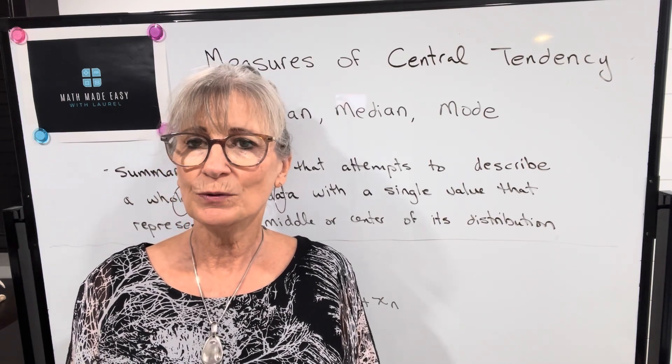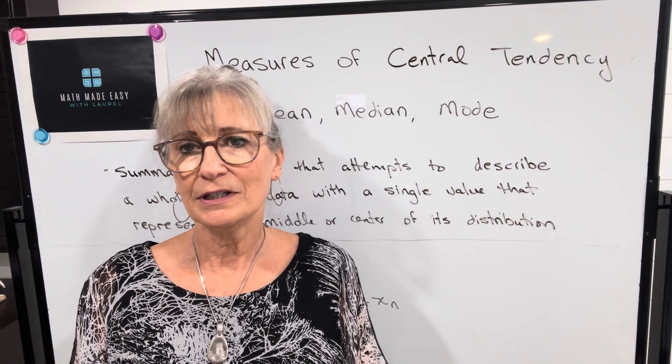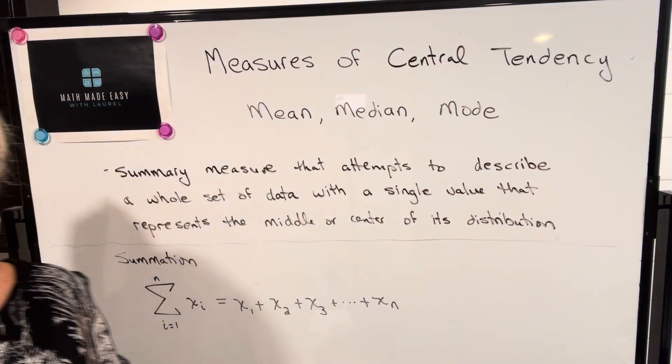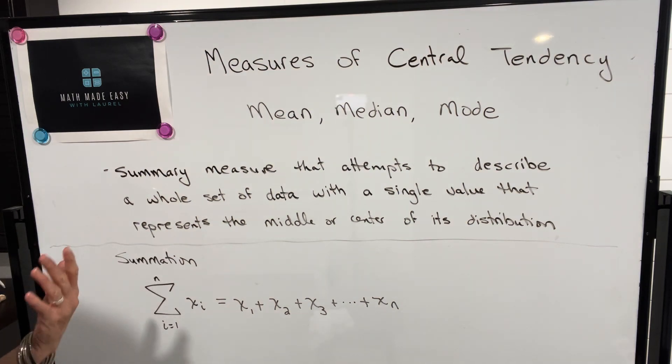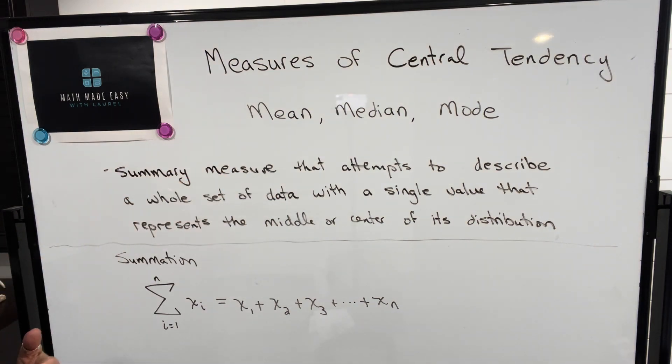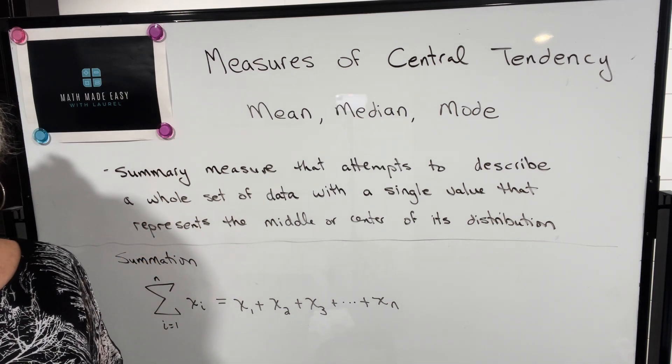Mean, median, and mode are three common units of measurement that are used to describe central tendency of a set of data. They're sort of summary measures that attempt to describe the whole set of data with a single value that represents the middle or center of its distribution.